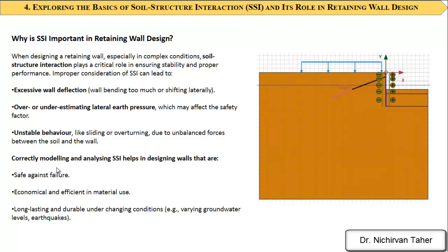Unstable behavior like sliding or overturning due to unbalanced forces between the soil and the wall is another risk. If you consider soil-structure interaction for retaining walls, you can estimate the overall factor of safety more precisely using finite element method software like Plaxis. Correctly modeling and analyzing SSI in a retaining wall helps accurately calculate the safety factor against failure.